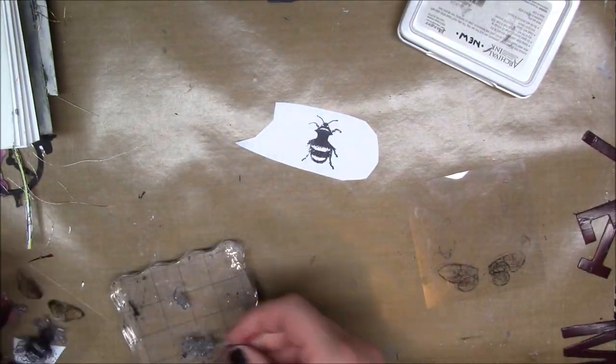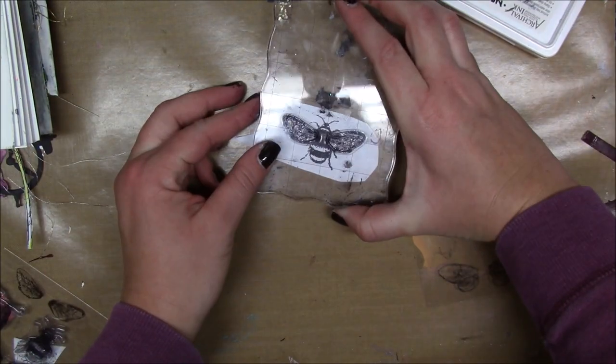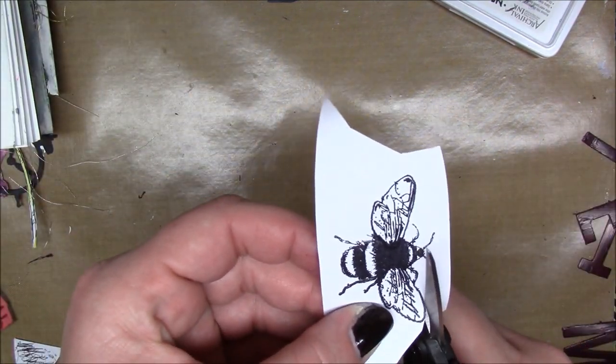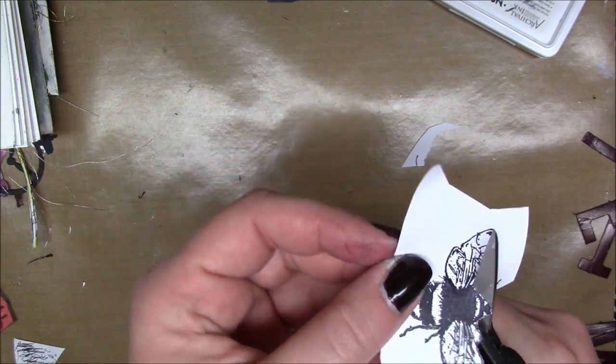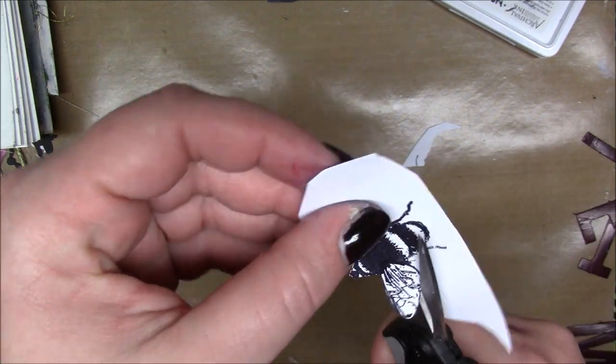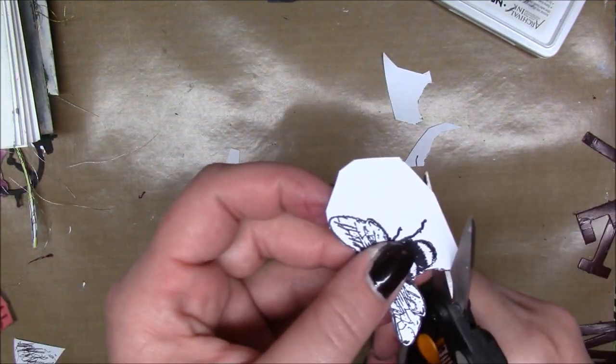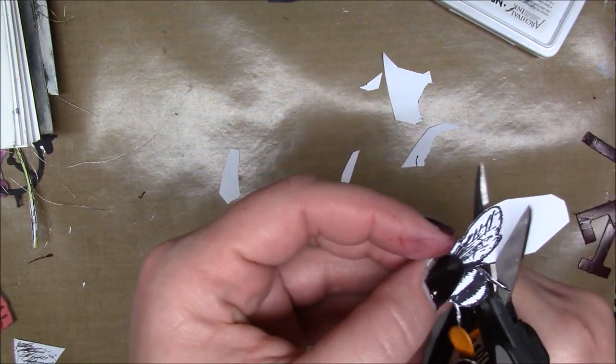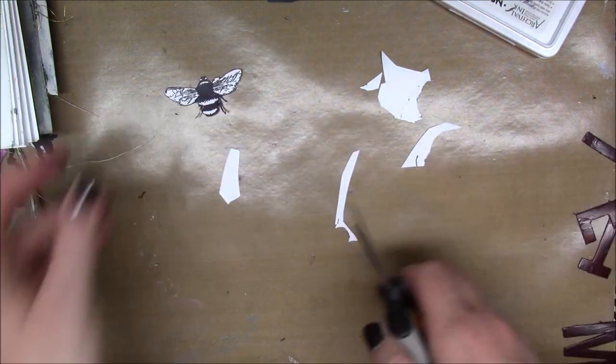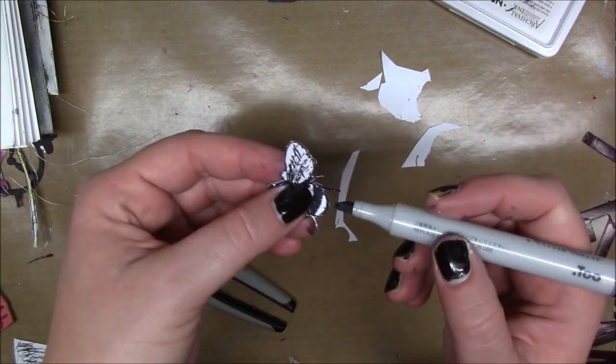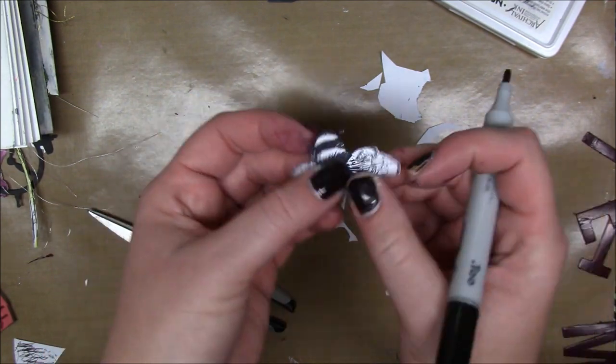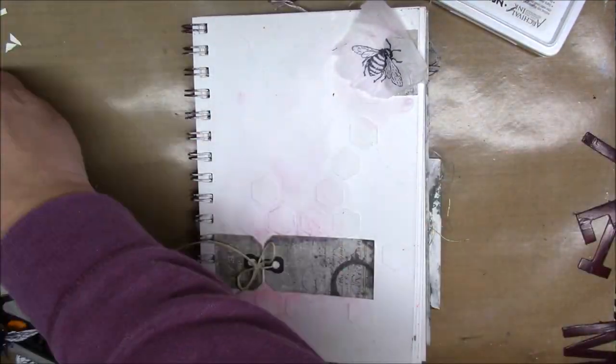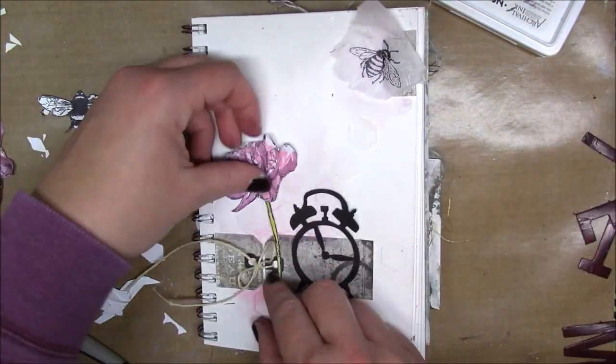I have a bee stamp from Prima that comes as the body and the wings, and you have to stamp them separately. I'm just going to cut him out. I don't show this, but I also stamped him on a piece of tissue paper because I wasn't sure where he was going to go. Just so I had the option, I stamped him on tissue paper. The reason I left the cutting is so I could show you after I cut it out. So you can't see the white lines around the edges, I go around my stamp with a black Copic marker.